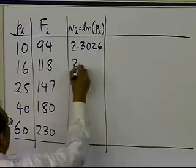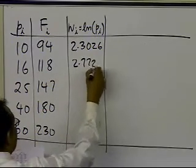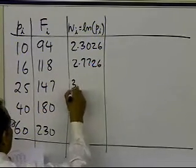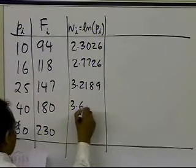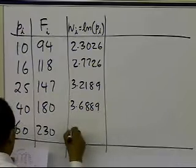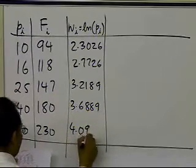Then 2.7726, 3.2189, 3.6889, and 4.0943.